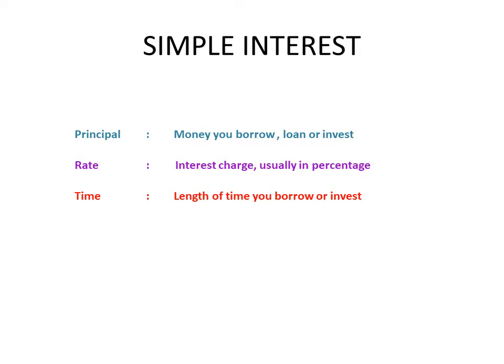These are the three things you should consider when calculating simple interest, and there's a simple formula: you just multiply all three elements together. Simple interest equals the principal times the rate times the time. Using abbreviations: SI equals P times R times T — SI for simple interest, P for principal, R for rate, T for time. Now let's try some examples.